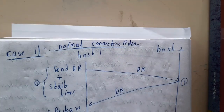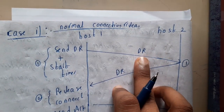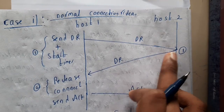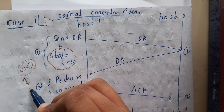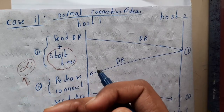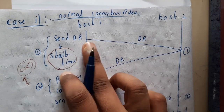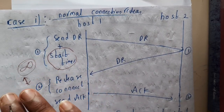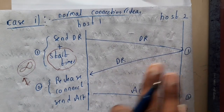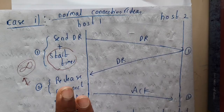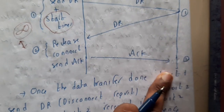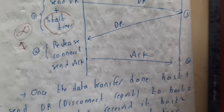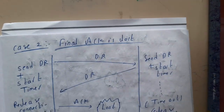In the normal symmetric connection flow, you send a release request and wait for the other host to release. You don't wait infinitely — you start a timer, say 60 seconds. If there is no response after 60 seconds, you retransmit the packet rather than disconnecting immediately. In the normal scenario, you send the request, get the confirmation, and release the network. Simple.